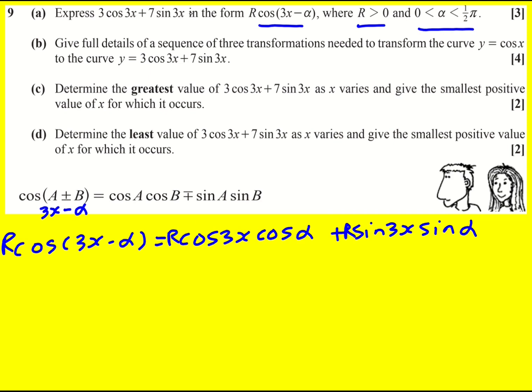Now because we're expressing in that form, we can now compare what we have with what is here, and I've got 3 cos 3x. So because I've got my cos 3x term here, it must be that R cos alpha is 3 for this to work. In a similar way, I've got 7 sine 3x, so it must be that R sine alpha is 7.